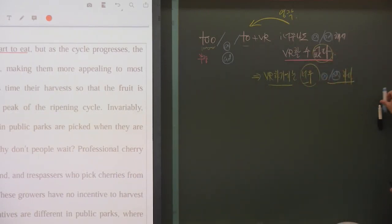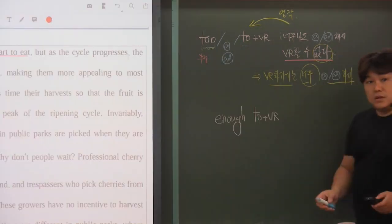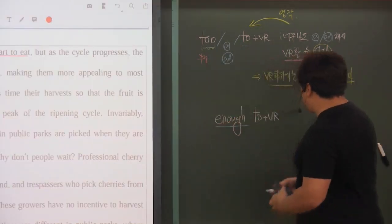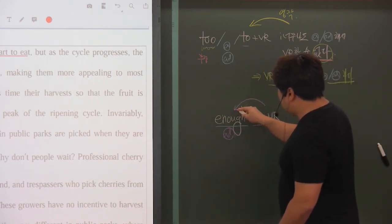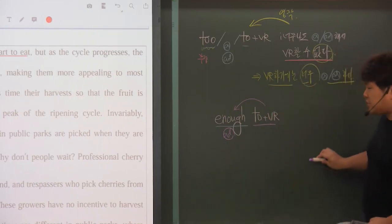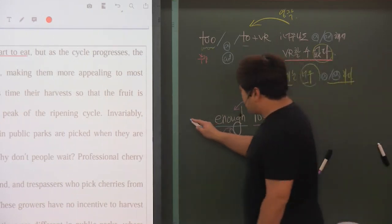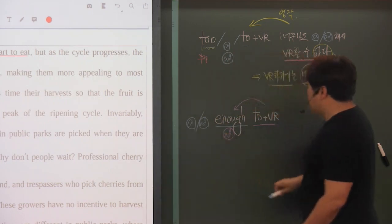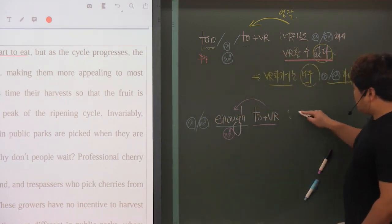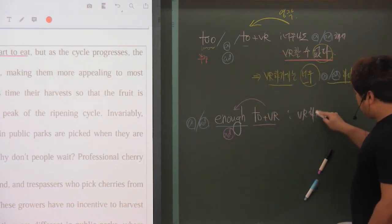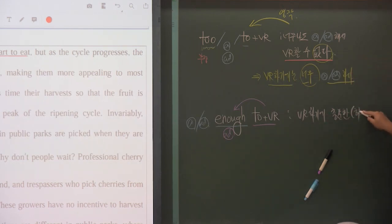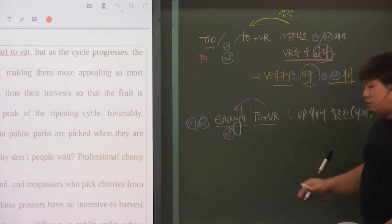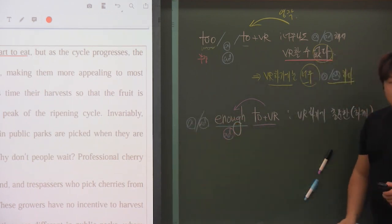또 다른 to 2용법과 비슷한 녀석이 있어요. 그게 바로 'enough + to부정사'죠. enough to 부정사에서 여기 나와있는 'enough'는 기본으로 부사입니다. 부사를 꾸며주기 때문에 뒤에 있는 녀석도 부사를 꾸며주니까 to 부정사의 부사적 용법이겠죠. 부사는 형용사와 부사 둘 다 꾸며줄 수 있습니다. 해석해보면 '동사원형 하기에 충분한' 혹은 '충분하게' 정도로 해석이 되겠죠. 'to부정사 하기에 충분하게' 정도로 해석이 되는 구문입니다.